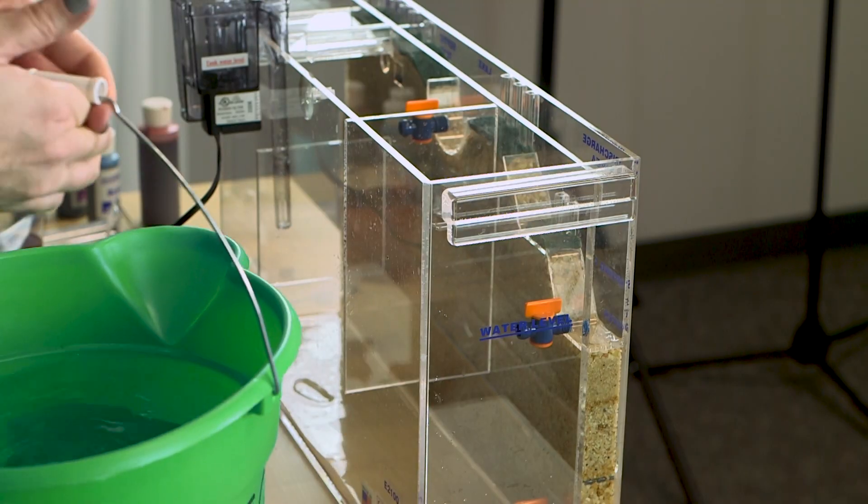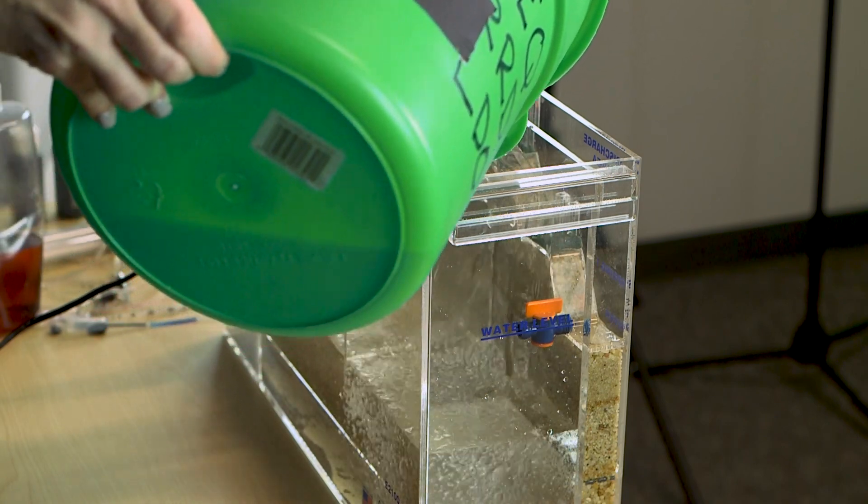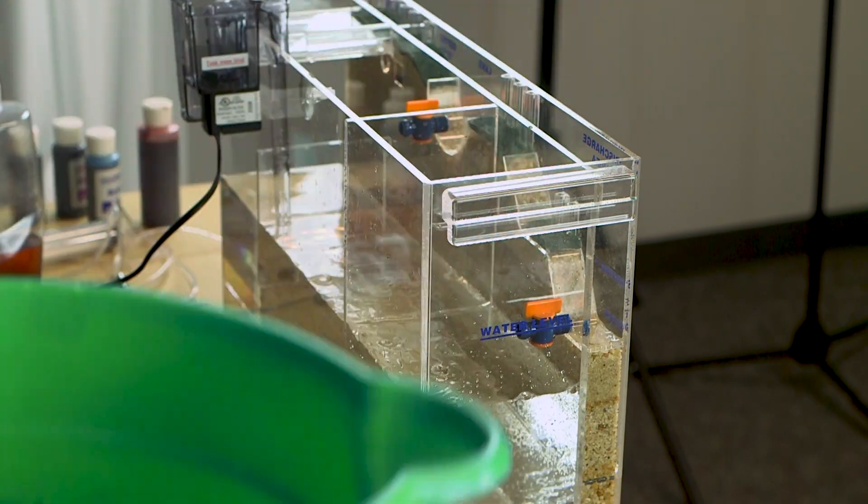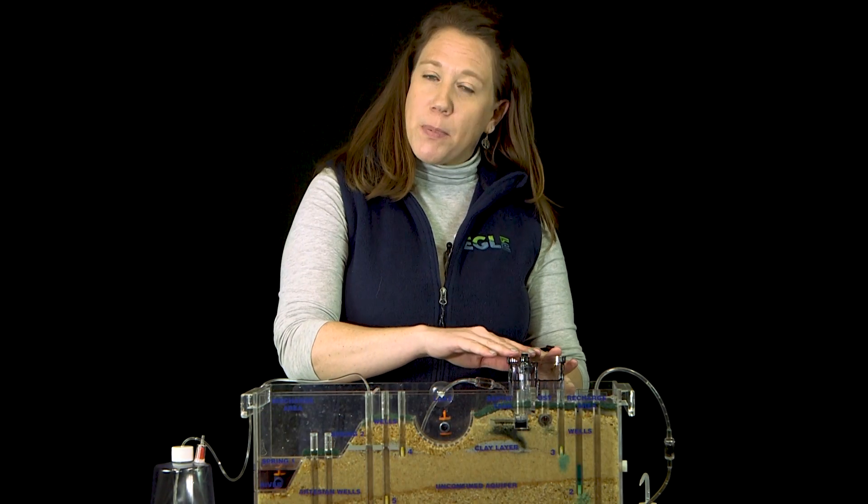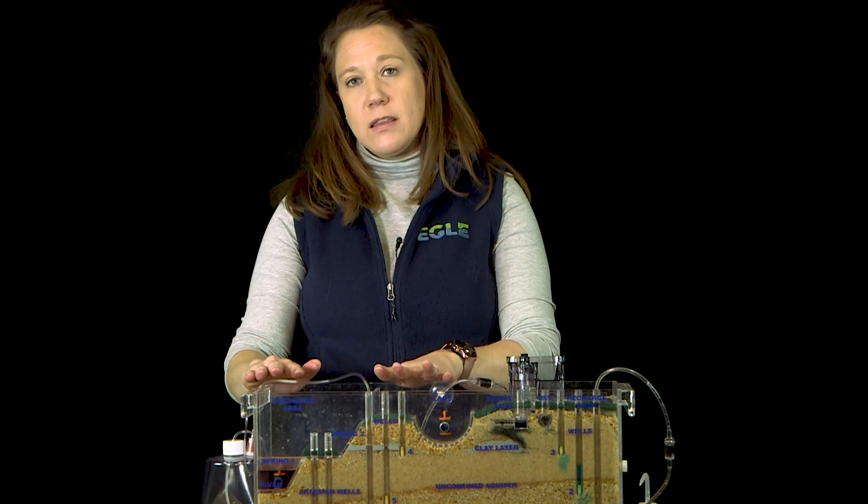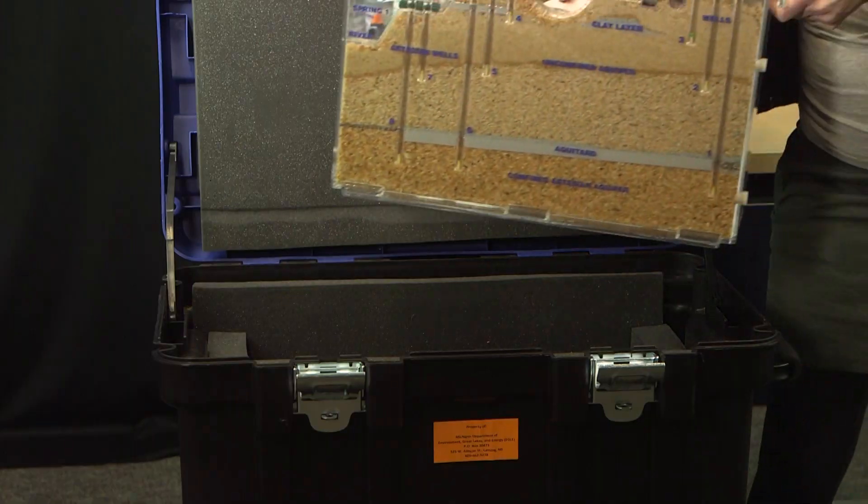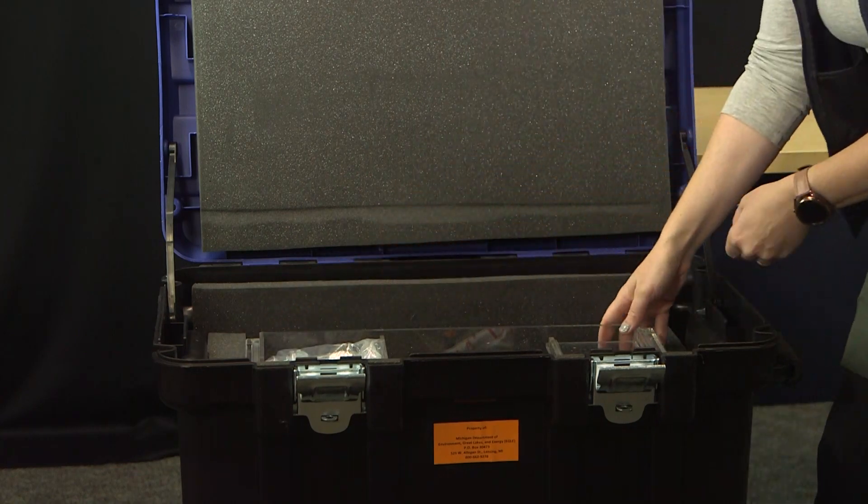If you use dye in your demonstration, close the drain valve then refill the model with warm but not boiling water as though you're going to run another demonstration. Be sure to prime the pump again then let the model run for about 30 minutes to flush the dye out of the sand. After the model has run for 30 minutes, empty the reservoir again then you can remove the drain valve and place the model back into the carrying case for storage.